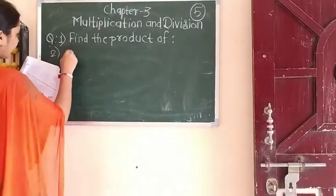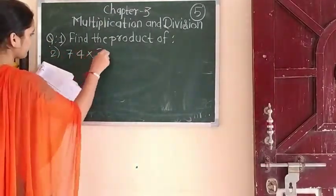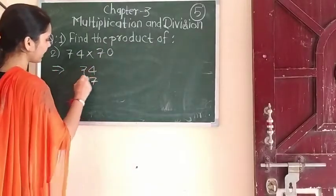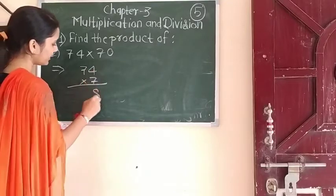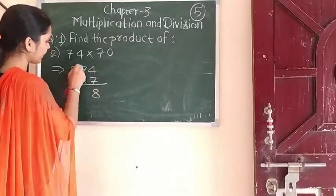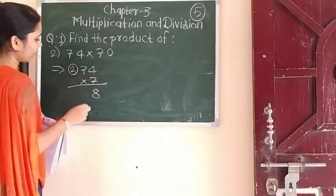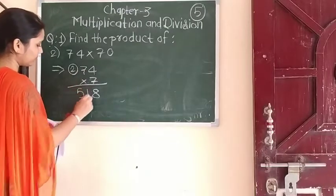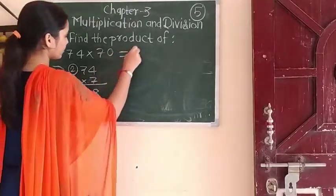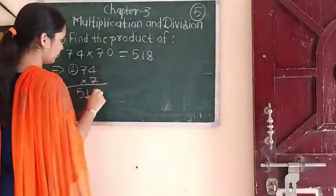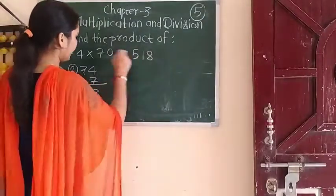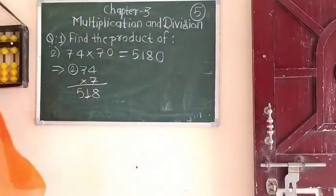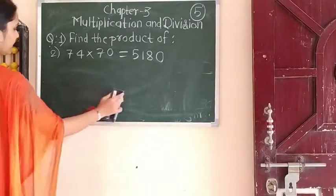Second one: 74 multiplied by 70. So how will you solve? Multiply 74 by 7: 7 fours are 28, 2 carry. 7 sevens are 49 plus 2 is 51. So we get 518. And there is 1 zero, so add it: the answer is 5180.